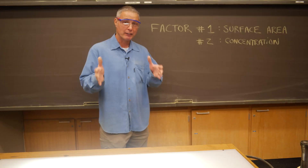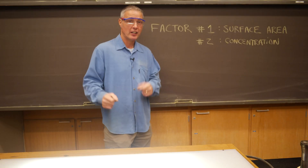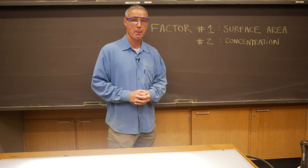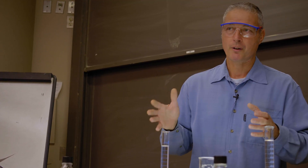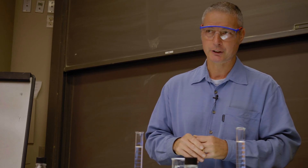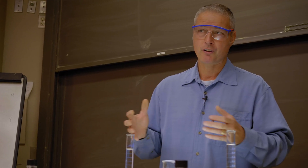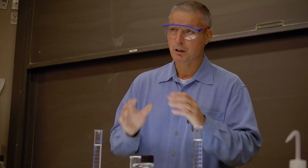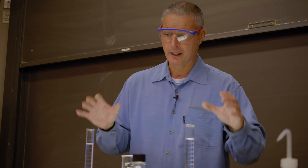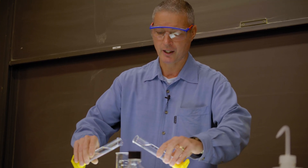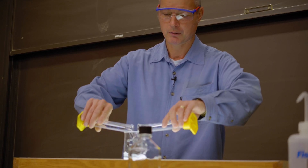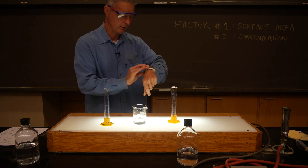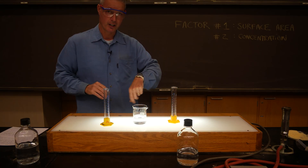Factor number two is concentration, or how crowded the molecules are. This is something called the iodine clock reaction — it produces iodine and starch, making a dark blue color. When the concentrations are known, we can time it and it'll always happen at the same time.